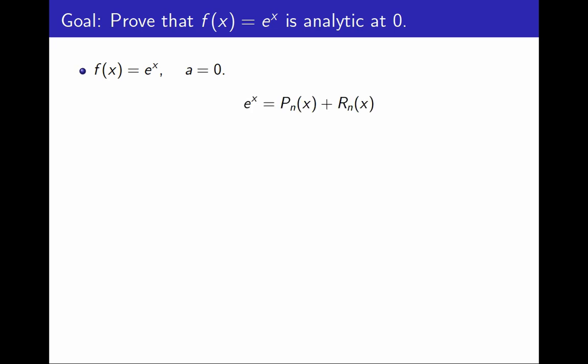We know, since this function is C-infinity, that e to the x can always be written as the nth Taylor polynomial plus the nth remainder. The nth Taylor polynomial P_n has this form: it's the sum from k equals 0 to n of x to the k over k factorial. I had already computed this in a previous video. I will put a link in the description.